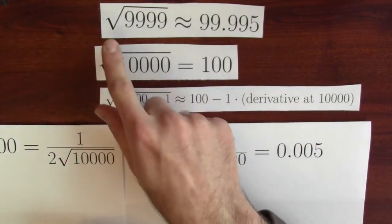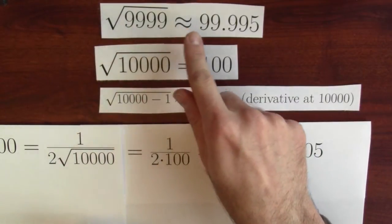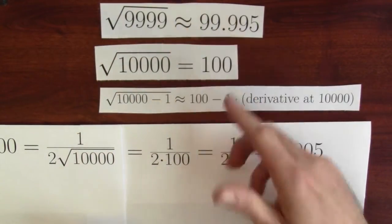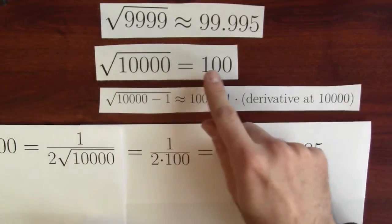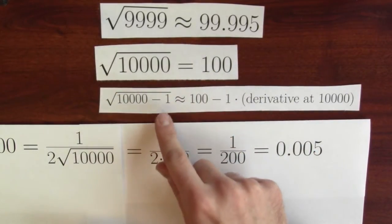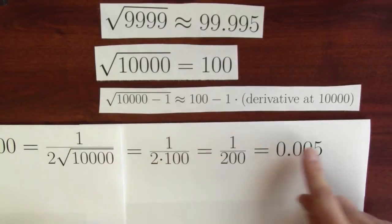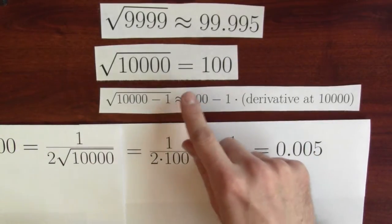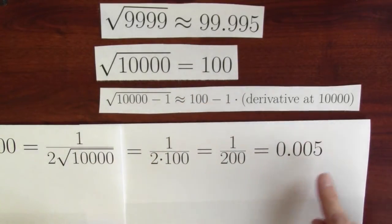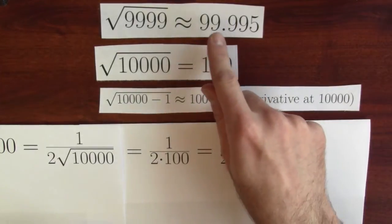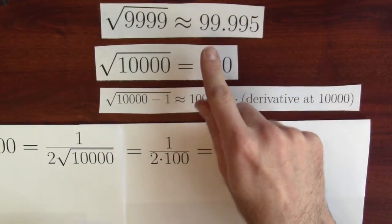Look, the square root of 9,999 is so close to 99.995 because the square root of 10,000 is 100, and when I shift the input down by 1, this derivative calculation is suggesting that the output should be shifted down by about .005, and indeed it is. This is a great example of calculus.